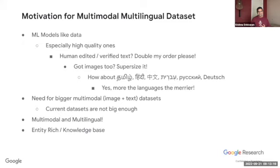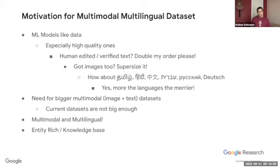The motivation for a multimodal multilingual dataset: as Shakespeare said, brevity is the soul of it, but when it comes to machine learning models, you want more data — the more data, the better the models learn. You want high quality data sets, and if it's human-edited, curated, and verified, it's even better. But large numbers of datasets are primarily in English, so you want a global representation — you want it to be multilingual. And the world is actually multimodal: we can see each other, talk, hear audio, video, images. The more multimodal the knowledge and how it's grounded, the better for models to learn.